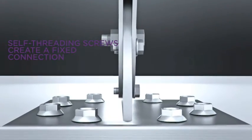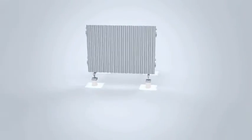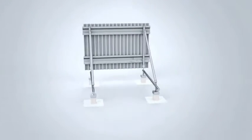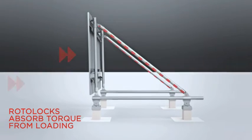When wind load is applied to an assembled frame, like a solar rack or roof screen for example, the Roto-Locks absorb torque that would otherwise be transferred into a twisting action on the roof joists.